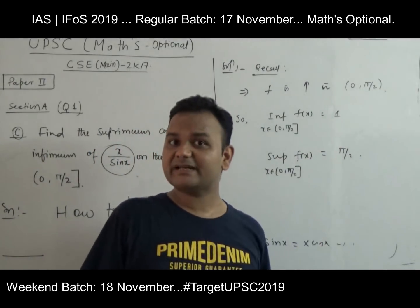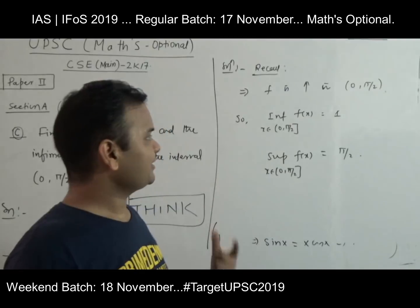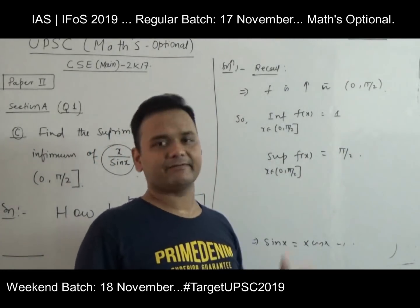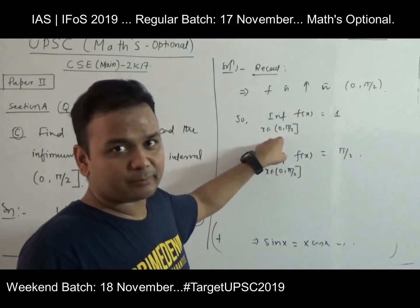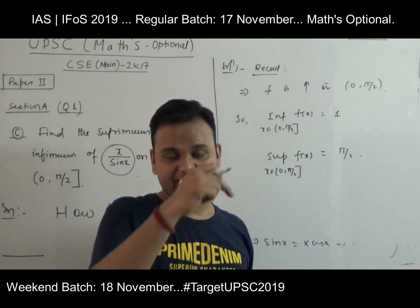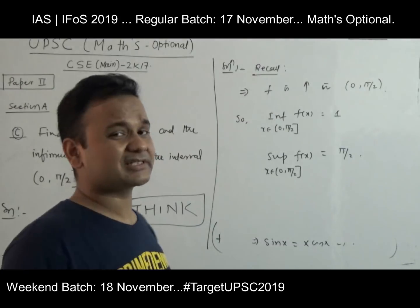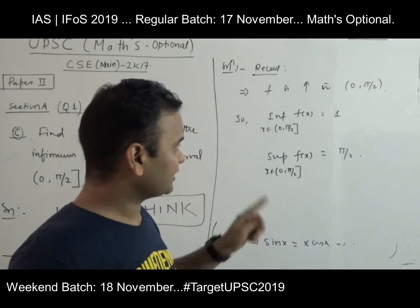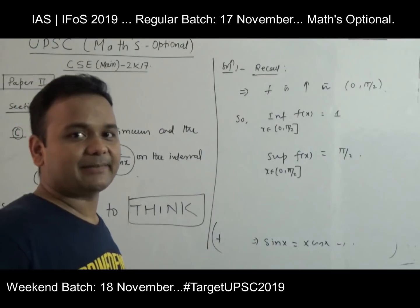Since it is an increasing function, it attains its minimum at the initial point and maximum at the ending point π/2. Since 0 is not in the domain, we take the limit as x tends to 0, giving x/sin(x) = 1 (the 0/0 form). So the answer is: infimum = 1, supremum = π/2.